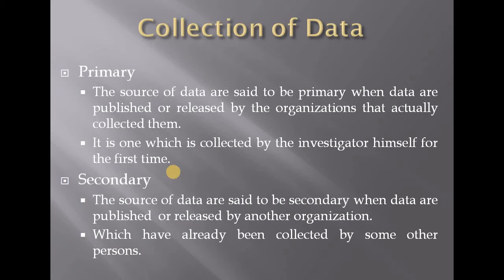There are two types of data: primary data and secondary data. Primary data means it comes from a primary source. The source of data is said to be primary when data are published or released by the organizations that actually collected them, or it is one which is collected by the investigator himself for the first time.